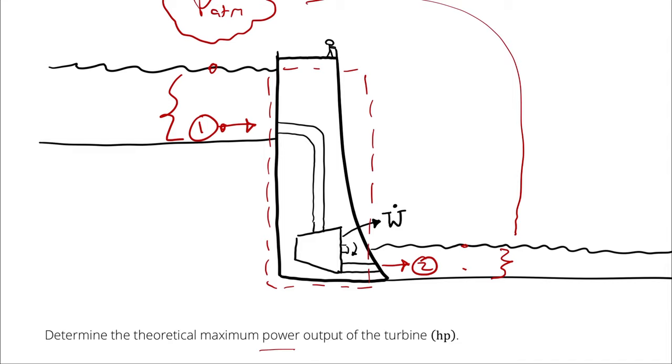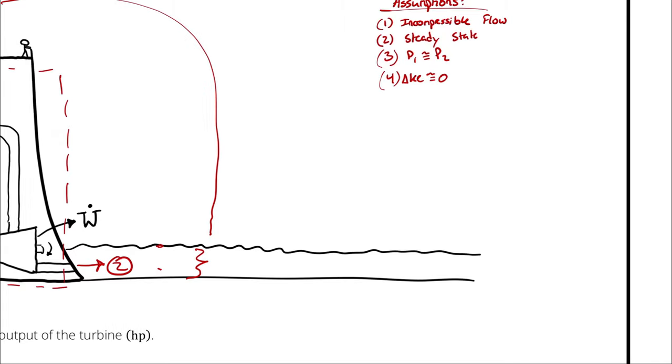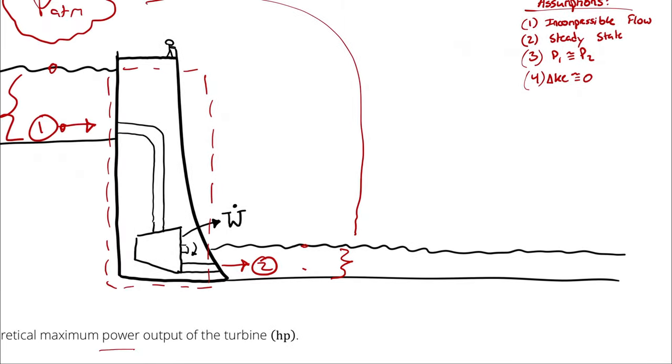the change in velocity isn't particularly relevant to this problem. We're saying V1 and V2 are pretty much the same, close enough for our purposes, so as to be able to account for that energy somewhere else.